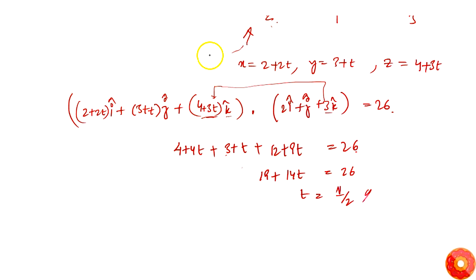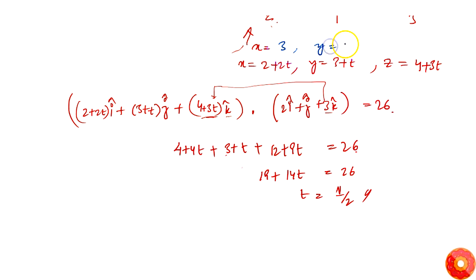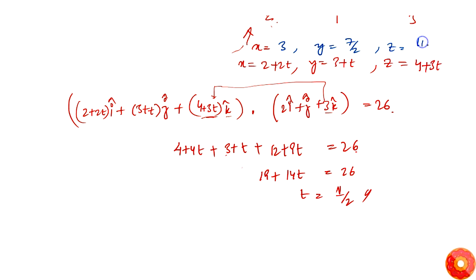With t = 1/2, we compute the foot of the perpendicular Q: x = 2 + 2(1/2) = 3, y = 3 + 1/2 = 7/2, z = 4 + 3/2 = 11/2. So the foot of the perpendicular is (3, 7/2, 11/2).